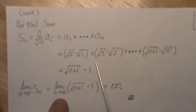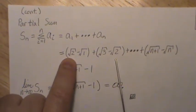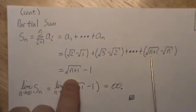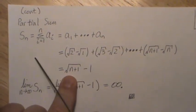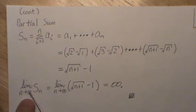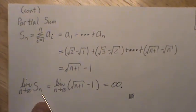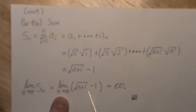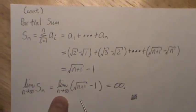But this is a telescoping sum, right? The terms cancel. So what's left is this minus one and the square root of n. That's the partial sum. Now let's look at the limit of this partial sum, which is this limit as n goes to infinity of S of n, which is this. But the square root goes to infinity, so this series goes to infinity.